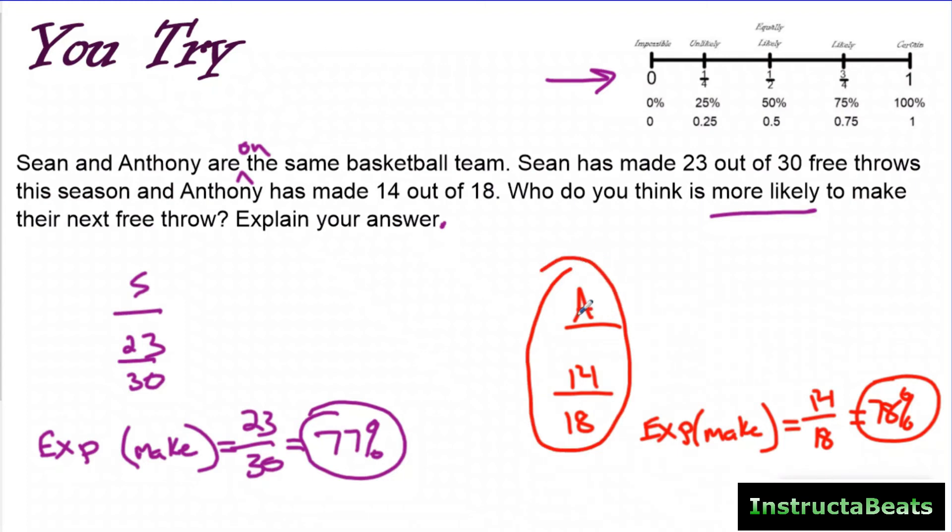Some of you might have been thinking on a higher level though. You're thinking, I know you said the more we have of the sample size, the better our experimental probability would be. So Sean's shot 30 free throws, and Anthony's shot 18. And just because I feel bad about that, look, if we did not round it to the nearest tenth, his would have been 77.7, and Anthony's would have been 76.6. So even if you didn't round it, Anthony's still had a better chance. But some of you might be thinking, Sean has a bigger sample size, so I know that percentage, that experimental probability is more accurate than Anthony's. And that's a perfectly good explanation, but for this, if we're using the experimental probability of what we have, we would say Anthony is more likely to make his free throw.